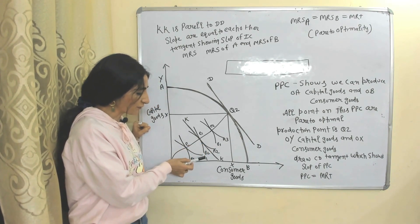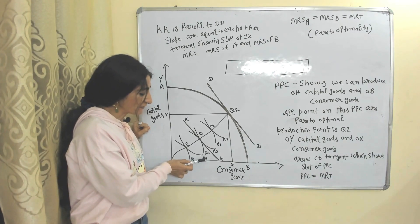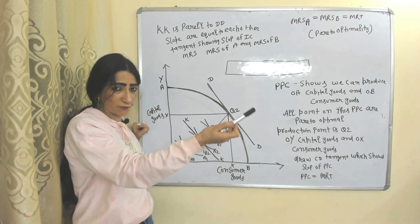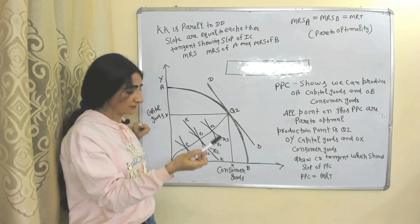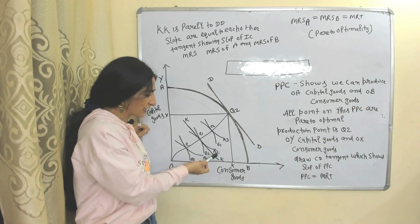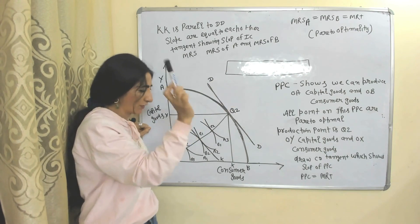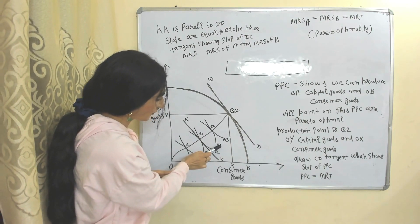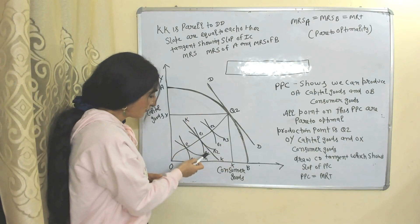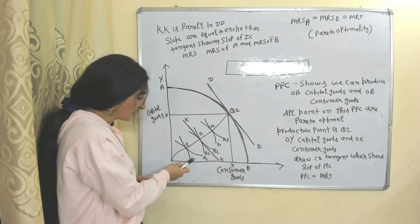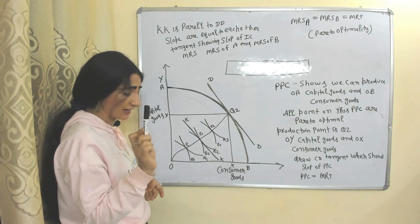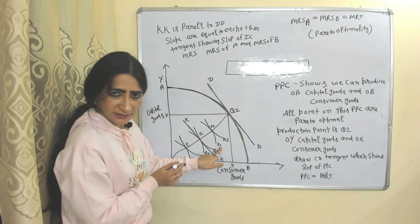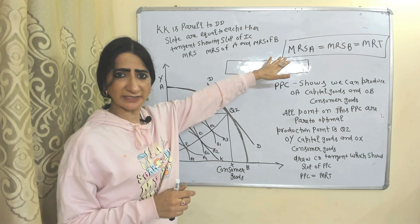Here we have indifference curves of two individuals, A and B. The indifference curve of individual A starts from A1 — if A moves from A1 to A2, their utility increases. The indifference curve of individual B starts from B1 — if B moves from B1 to B2, their utility increases, and if B moves from B2 to B3, utility increases even more.